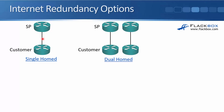For redundancy, the customer may want to use dual-homed instead. What they've done is double up on everything: two customer routers are connected to two service provider routers over separate links. So if any router or link fails, the customer will still retain internet connectivity.